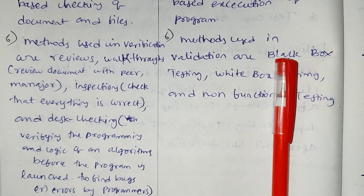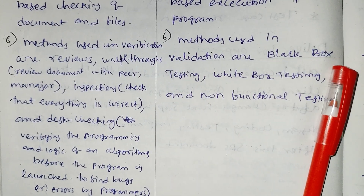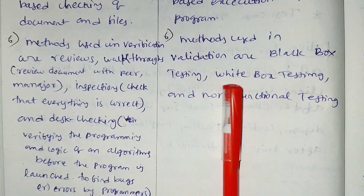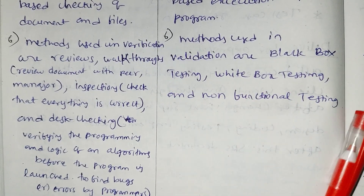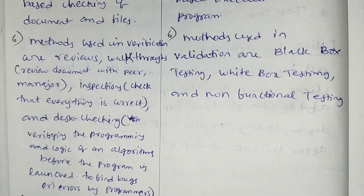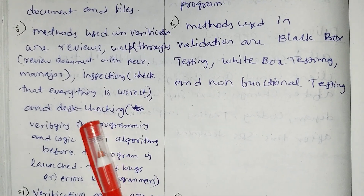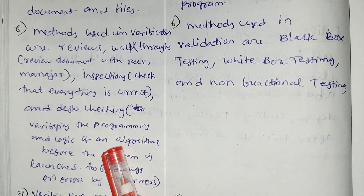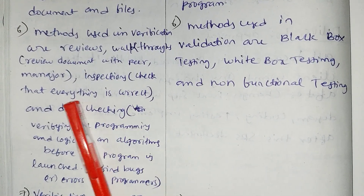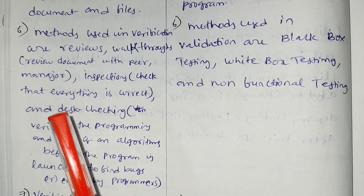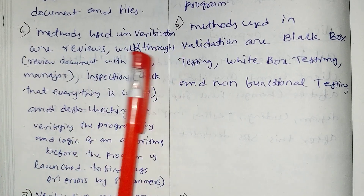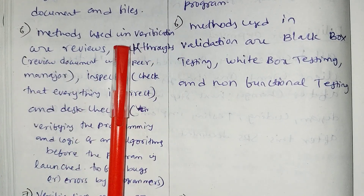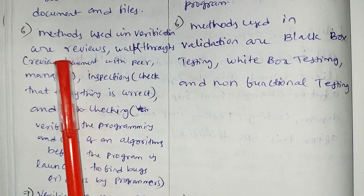Methods used in validation are: black box testing, white box testing, and non-functional testing. This is the key difference — these are the methods used in verification versus validation.